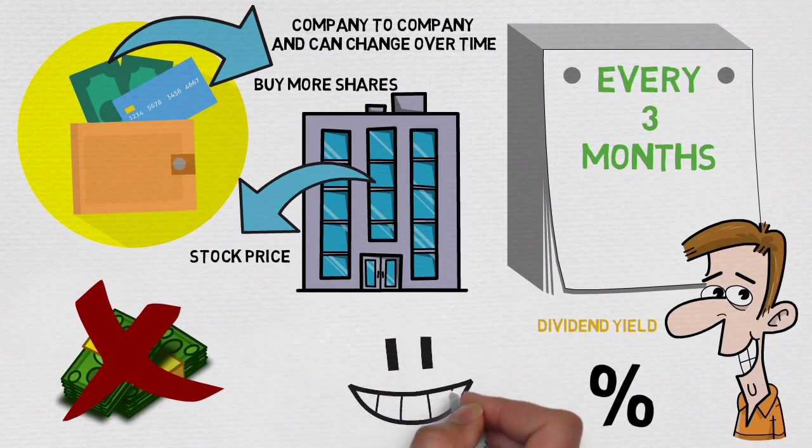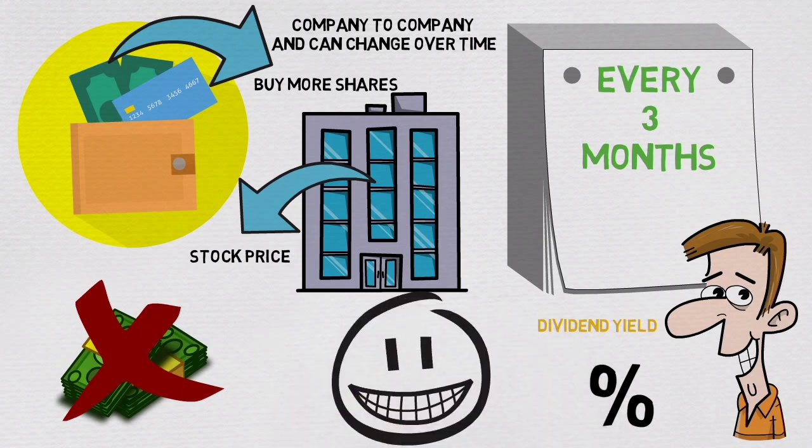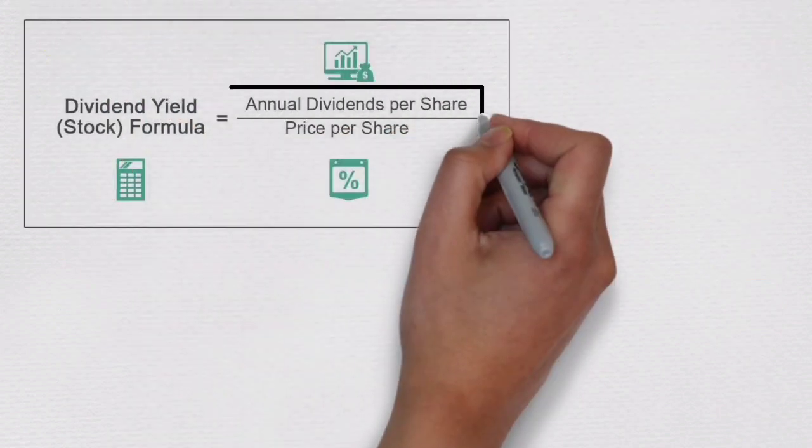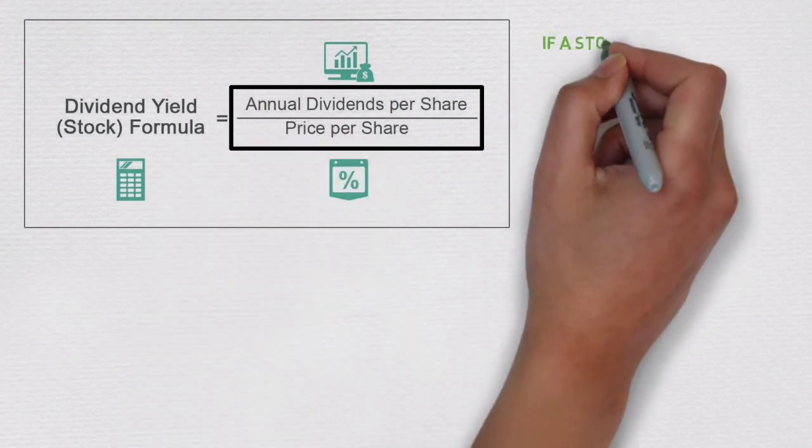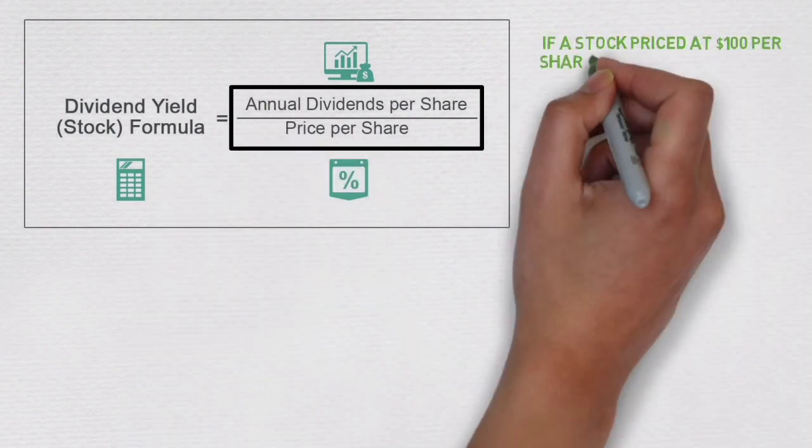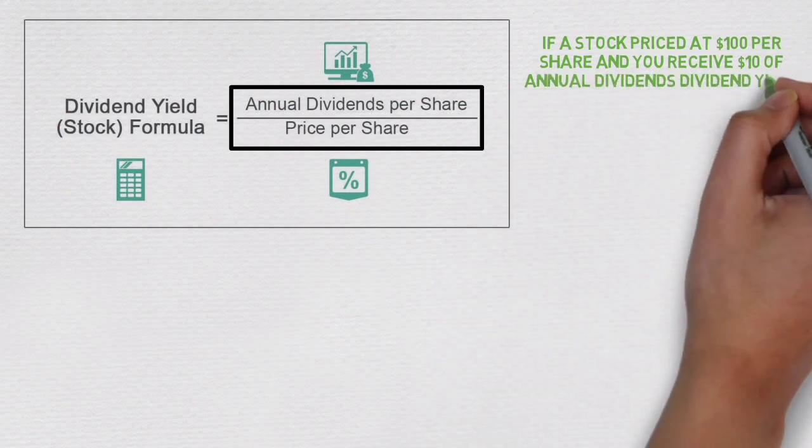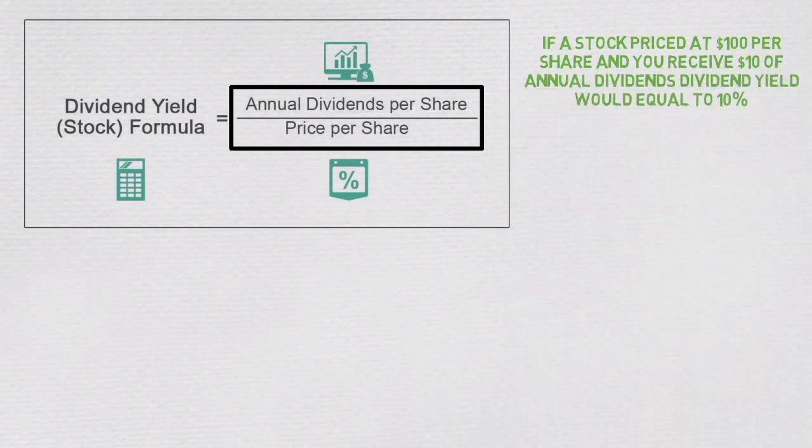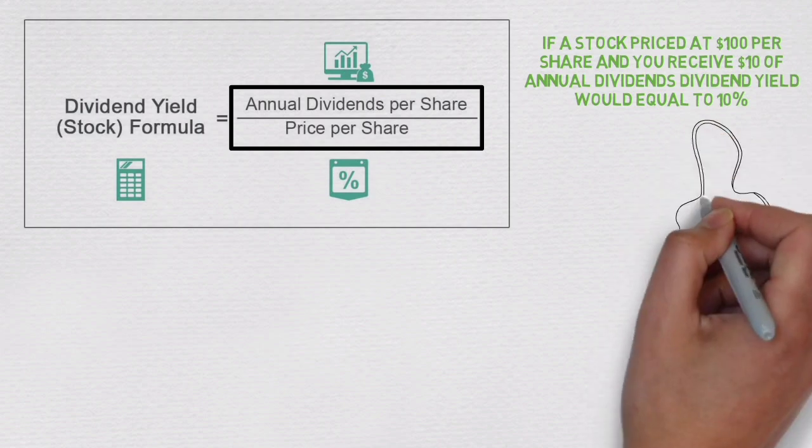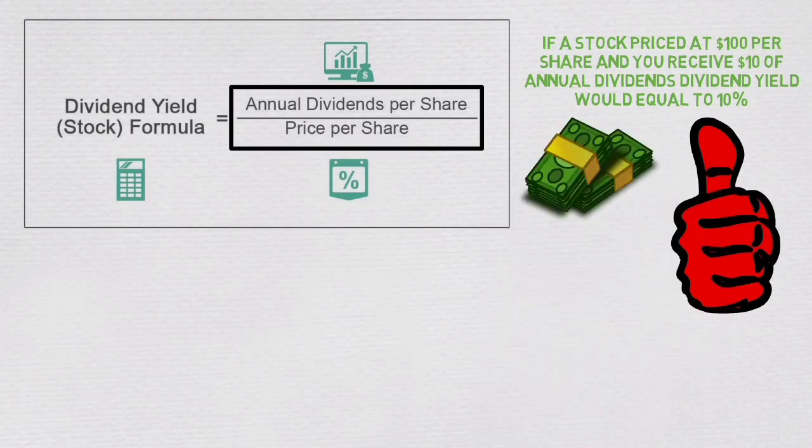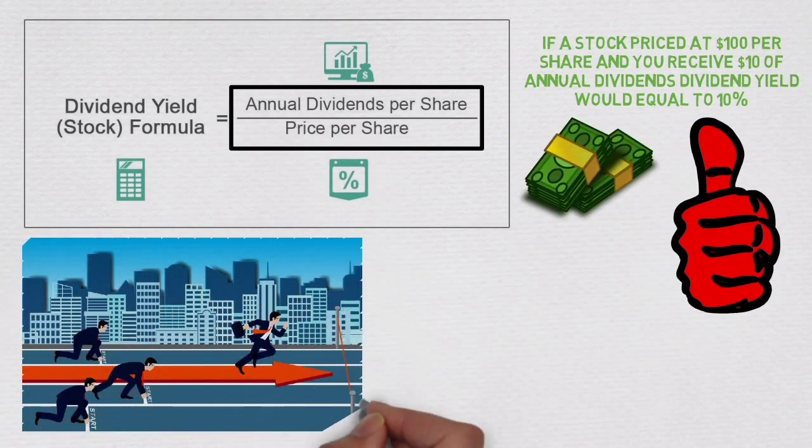If you want to calculate dividend yield, you don't have to be a mathematician since it is very simple. Take annual dividends per share and divide it by the price per share. If a stock priced at $100 per share and you received $10 of annual dividends, dividend yield would be equal to 10%. Understanding this makes easier to compare different stock prices, dividend yields and amount invested it would take to achieve your goals.